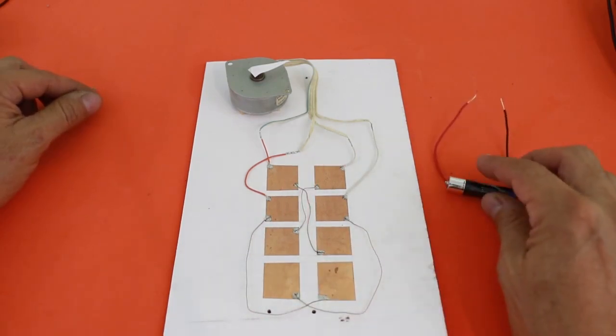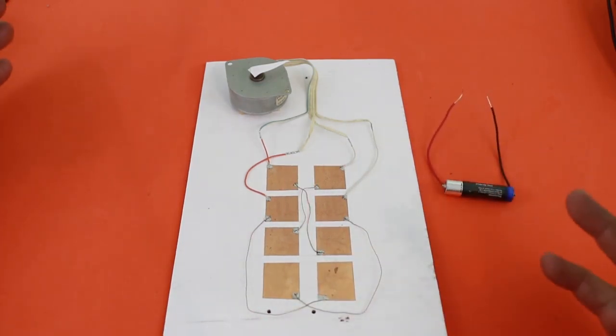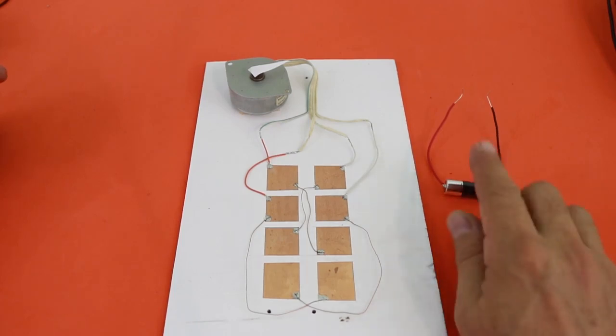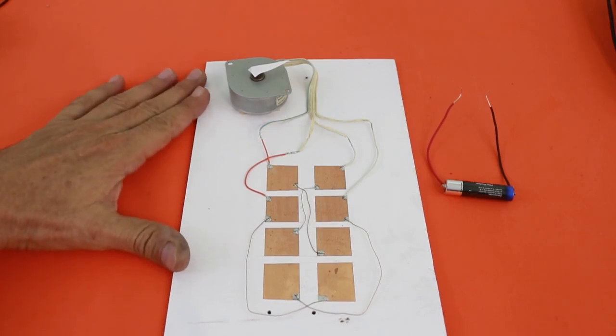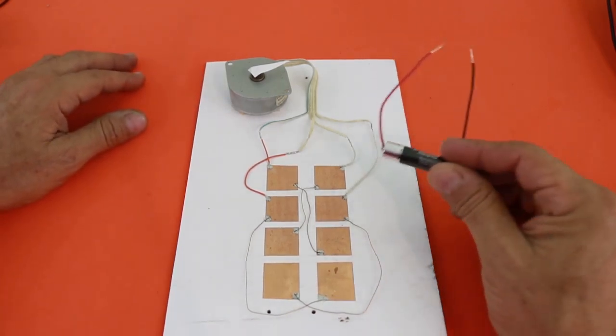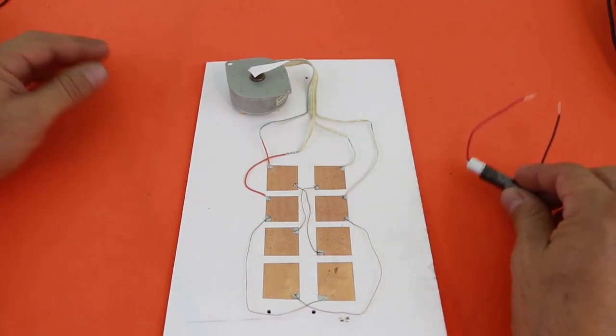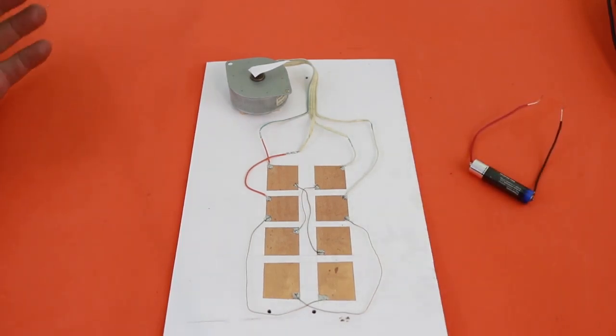So you can see how the motor turns every time we feed a coil with the battery. In a real application the commutation is done electronically instead of manually as we are doing here using a controlling circuit for stepper motors.